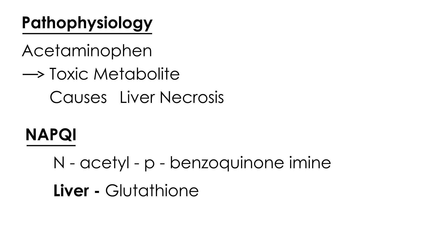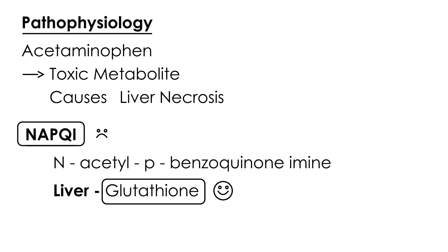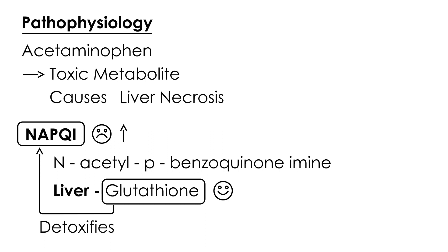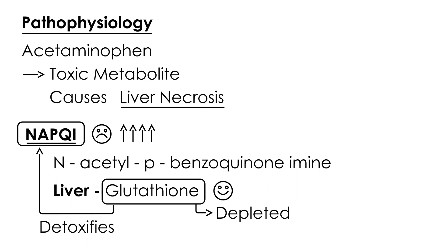Fortunately, in our liver we have something called glutathione, which is an antioxidant — the good guy here. This good guy detoxifies the bad guy, NAPQI. However, in an overdose, a lot of NAPQI builds up, and unfortunately the glutathione gets depleted — all used up. When the glutathione stores in the liver are fully depleted, NAPQI accumulates and eventually leads to liver necrosis.